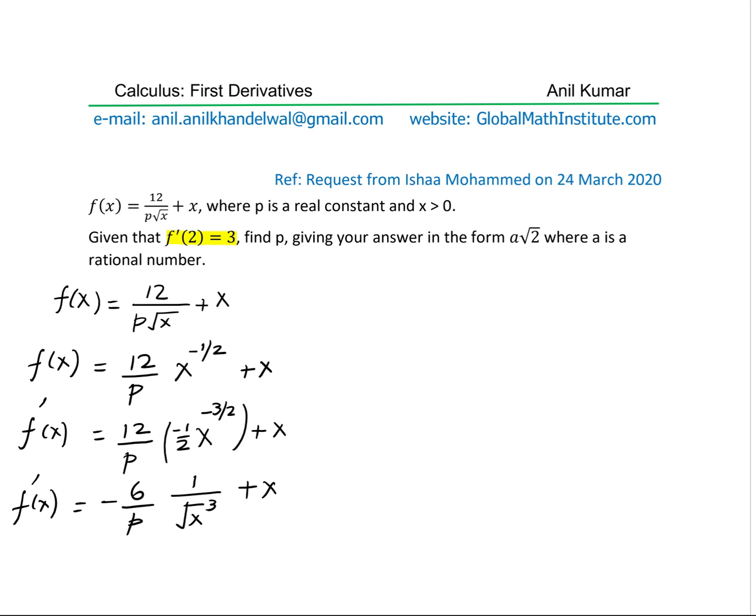Now we are going to apply the given condition, which is that the derivative of the function at 2 is equal to 3. So, replace x with 2 and then find the value of p. Substituting 2 for x, we get f dash 2, which is equal to 3, equals minus 6 over p times 1 over...